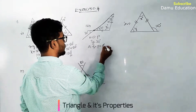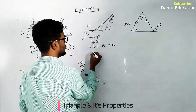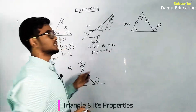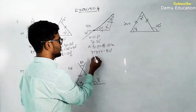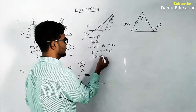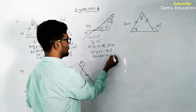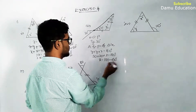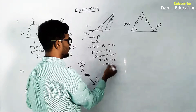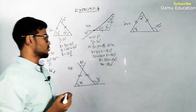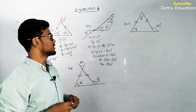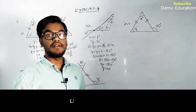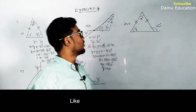Using the angle sum property: y + y + x = 180°. Substituting y = 30°: 30 + 30 + x = 180, so x = 180 - 60 = 120°. Therefore x = 120° and y = 30°.